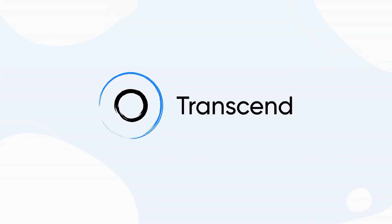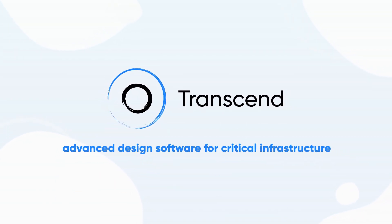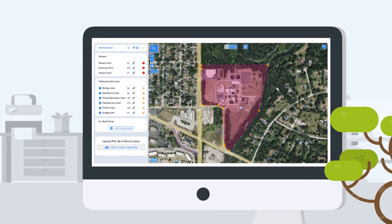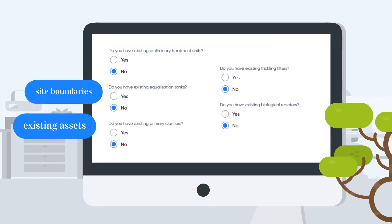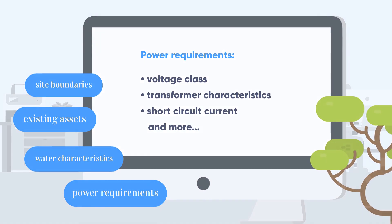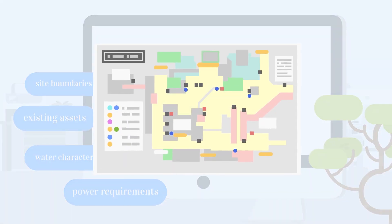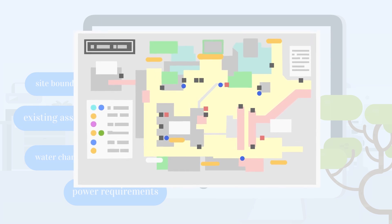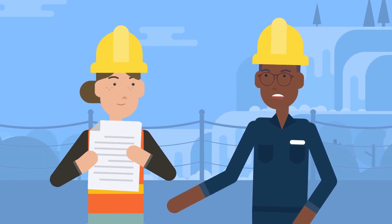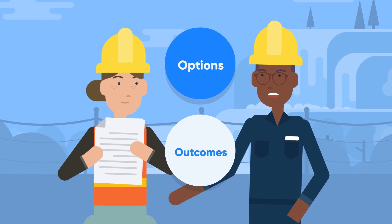And there is the Transcend Design Generator, the world's most advanced design software for critical infrastructure. With a limited number of project-specific inputs, like site boundaries, existing assets, water characteristics, and power requirements, TDG automatically calculates and designs accurate engineering documentation for water and power assets, enabling the utilities, engineers, and equipment suppliers building these projects to evaluate the best options and outcomes before construction begins.